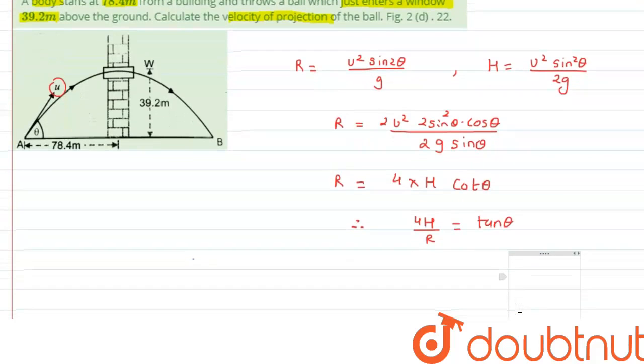Now what we can do here is we can just substitute the value to get the angle first. So we have been given with height, that is 39.2, and range...